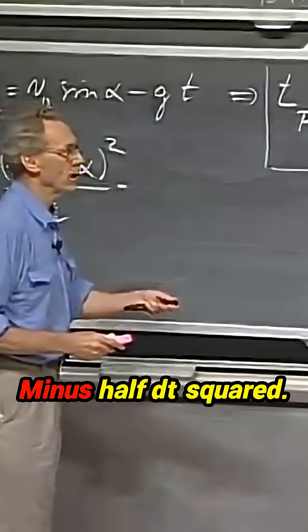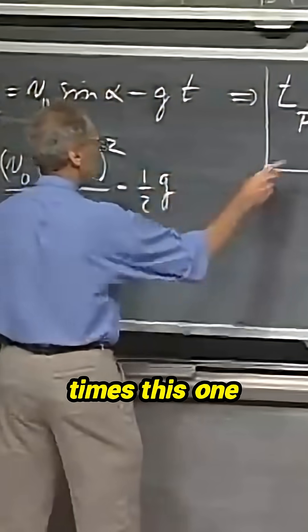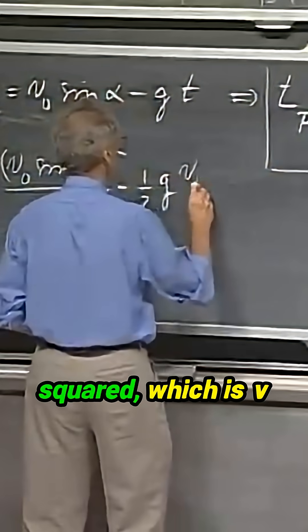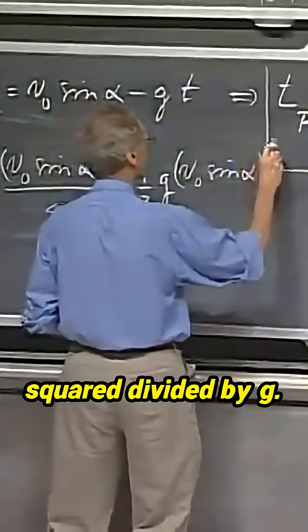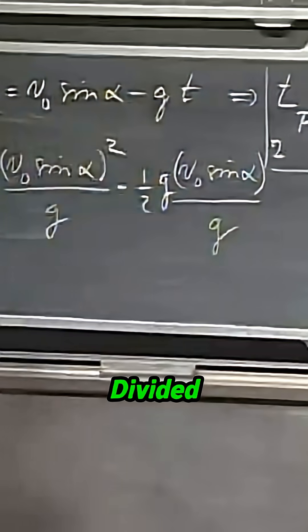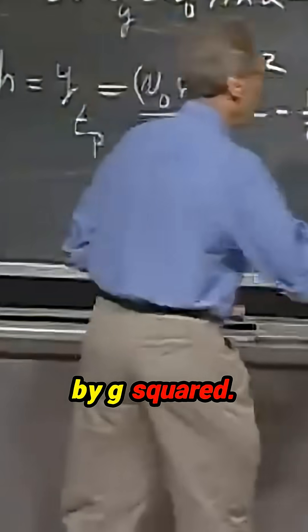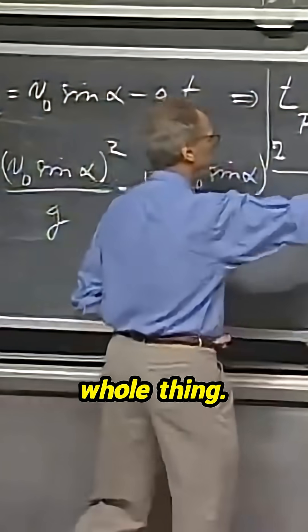This equation: minus half t squared minus one-half g times this one squared, which is v zero sine alpha squared, divided by g. Divided by g squared. Of course, there's a g here, you see? So you square the whole thing.